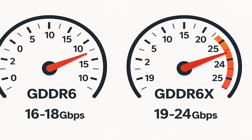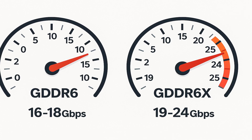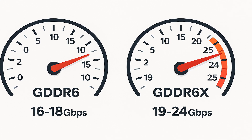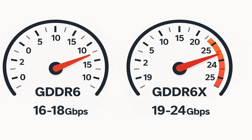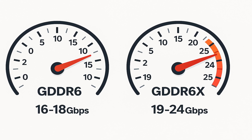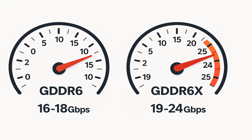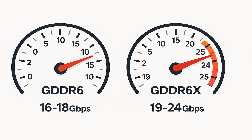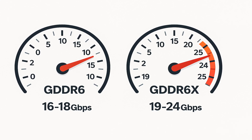Because of this four-level signaling, GDDR6X can go much faster. GDDR6 usually tops out around 16 or 18 gigabits per second — like sending a whole HD movie in just a couple of seconds. But GDDR6X can do 19, 21, or even 24 gigabits per second. It's like upgrading from a sports bike to a jet engine, but jets need perfect weather to fly, and GDDR6X needs perfect signals to work properly.